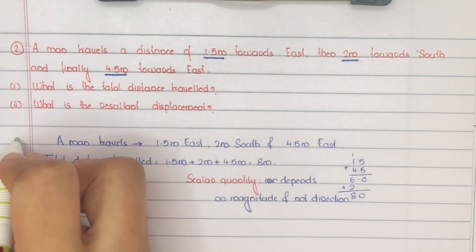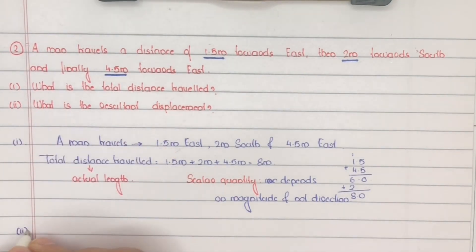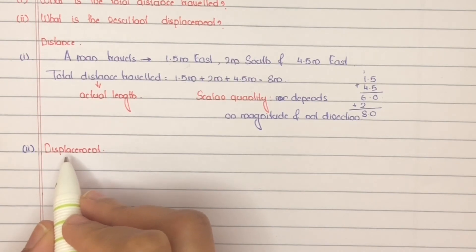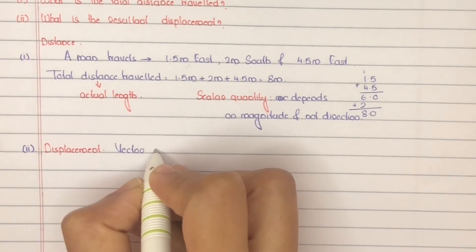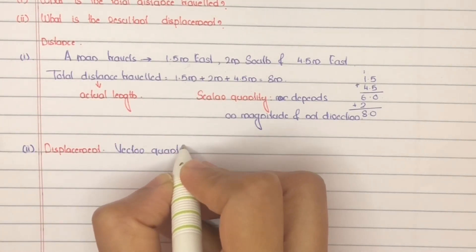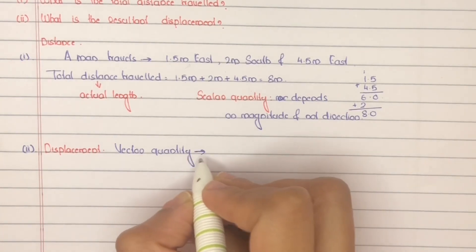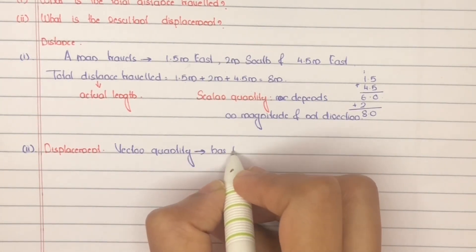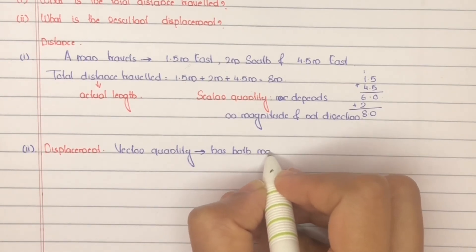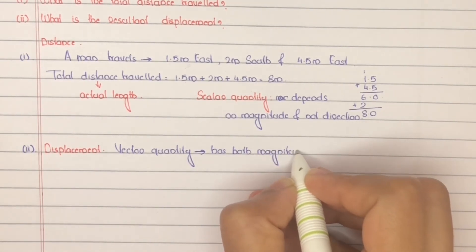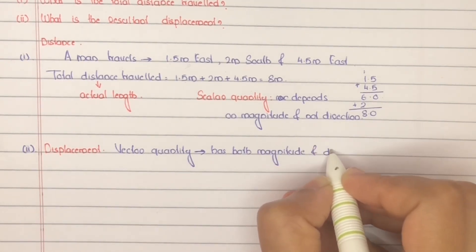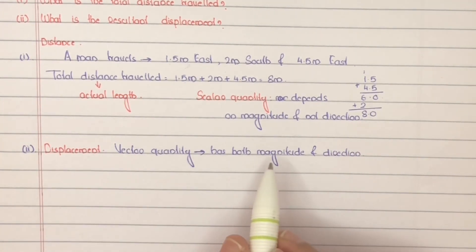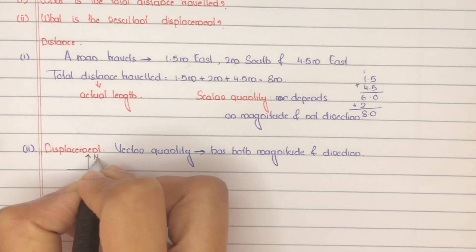Second part: what is the resultant displacement? Displacement is a vector quantity — that is, it has both magnitude and direction. While calculating displacement, magnitude as well as direction is important.